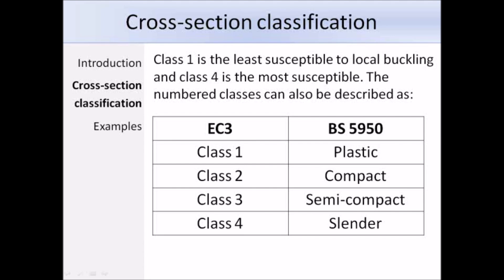In Eurocode 3, cross-sections are put into one of four behavioural classes depending on the yield strength, the width-to-thickness ratio of the individual compression parts, and the loading arrangement. The four classes are similar to those in BS 5950: class 1 is equivalent to plastic, class 2 to compact, class 3 to semi-compact, and class 4 to slender. The classes are ranked by susceptibility to local buckling, with class 4 most susceptible and class 1 least.